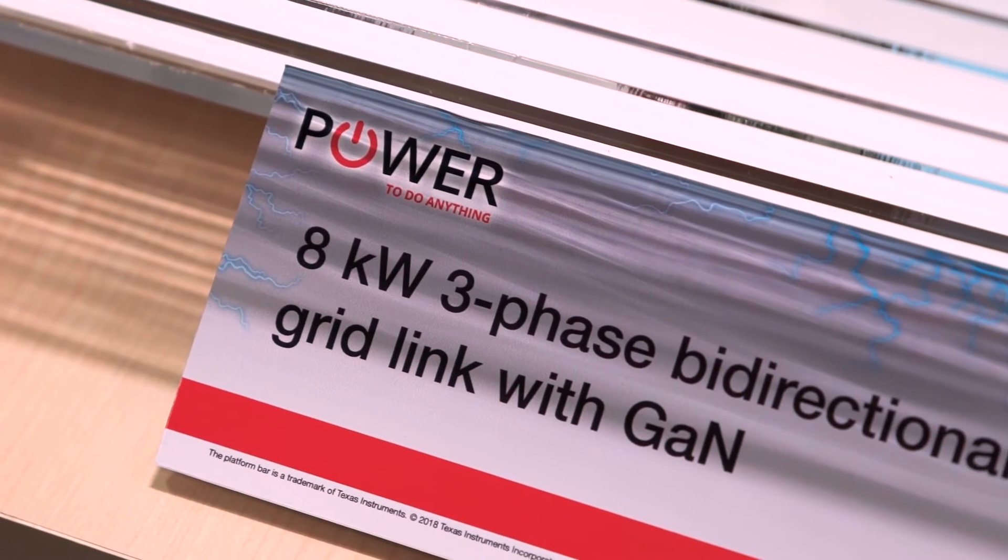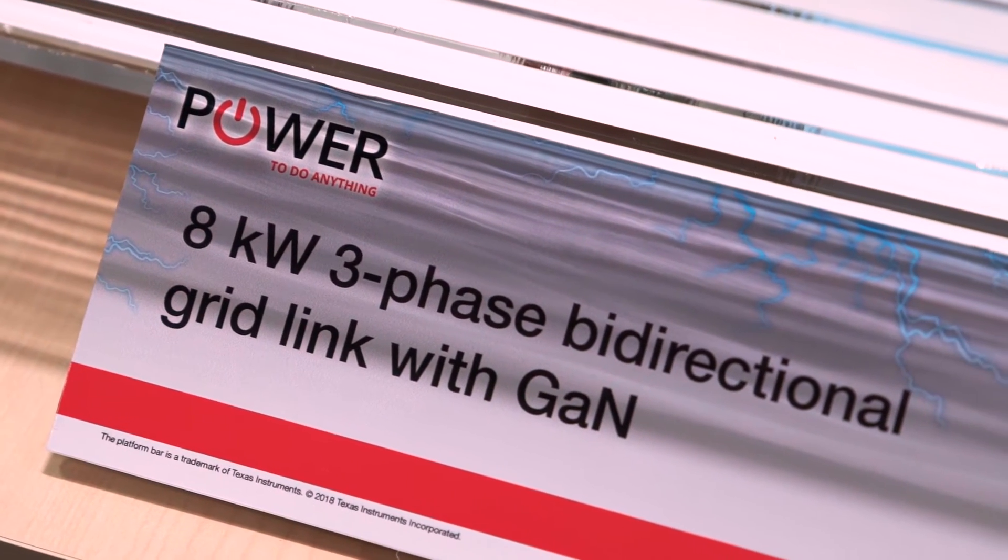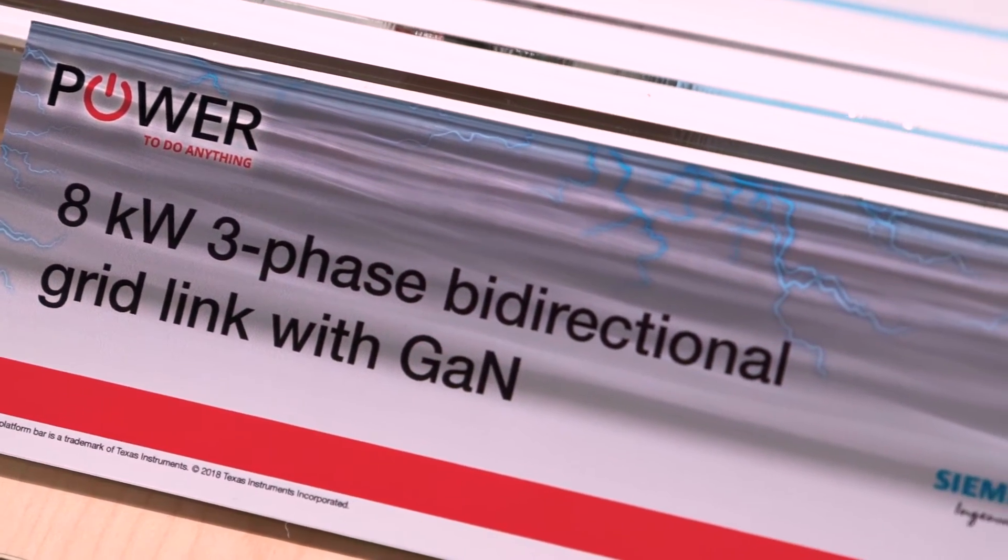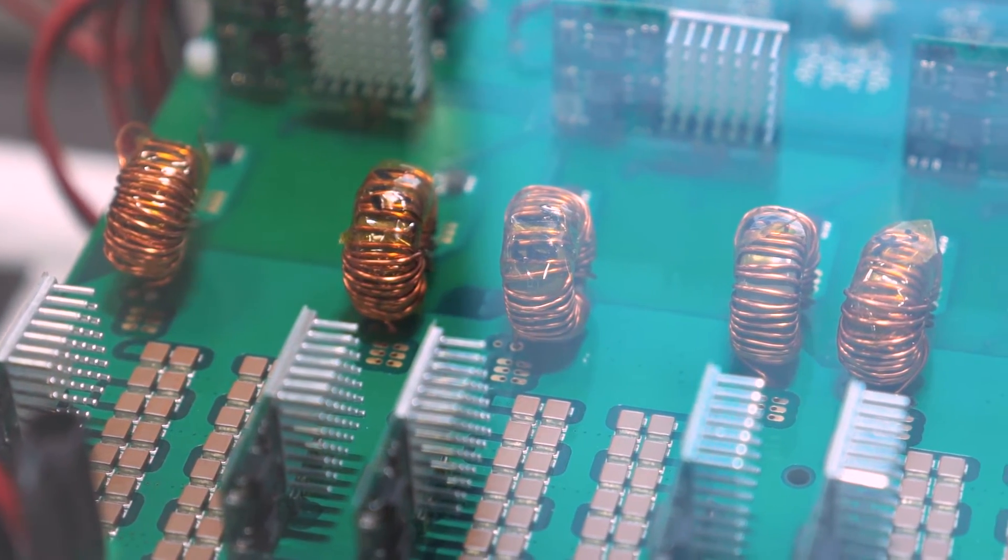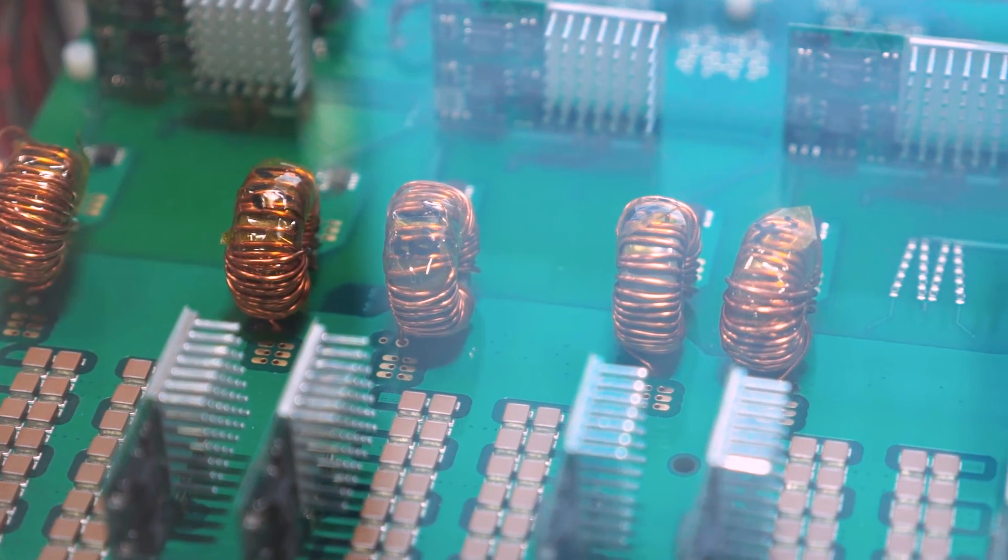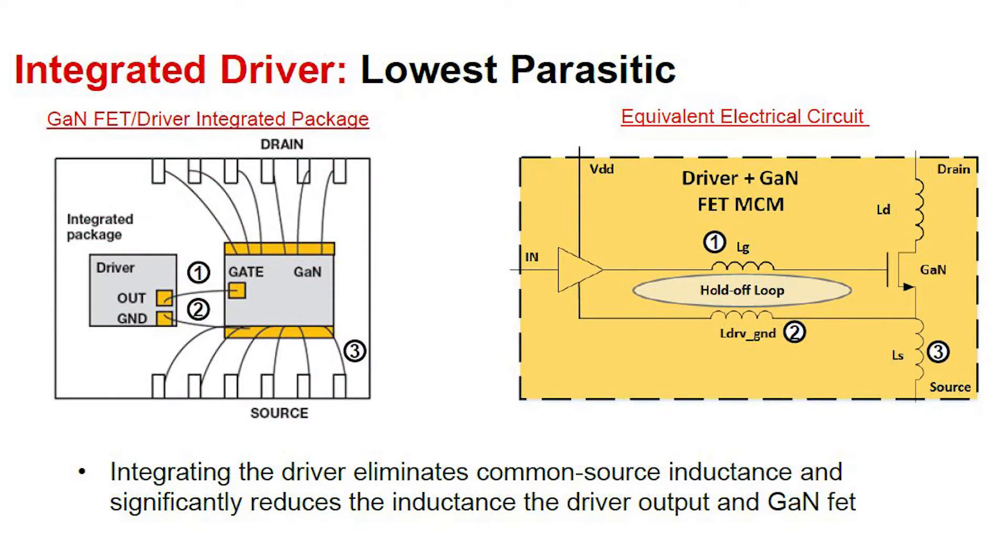So what we are doing here is actually we are showcasing a three-phase, three-level, bi-directional grid-tied inverter which we developed jointly by TI and Siemens, and we are using our TI GaN FETs which are 600-volt GaN FETs which are also integrating the driver as well as some smart features like overcurrent protection and over-temperature protection in a single low inductance package.